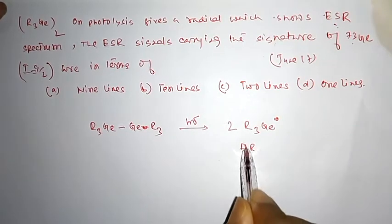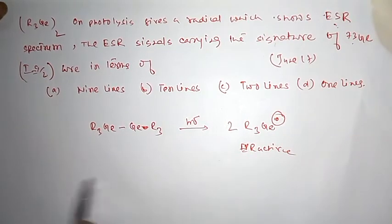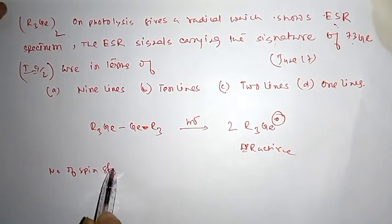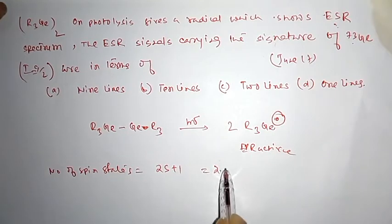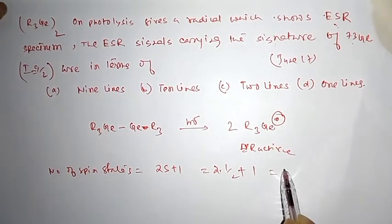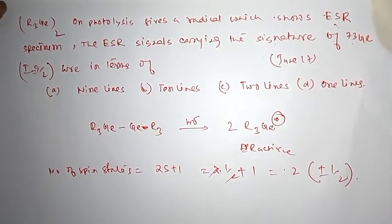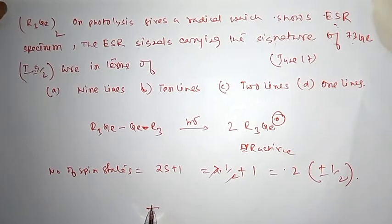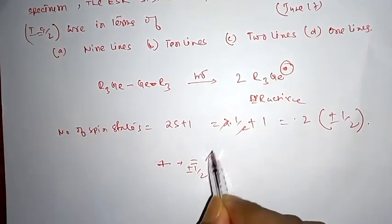This is EPR active since there is one electron. So the number of spin states is 2S plus 1 equal to 2, that is plus minus half. So plus minus half, we can have two spin states for one electron.